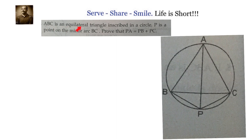ABC is an equilateral triangle inscribed in a circle. P is a point on the minor arc BC. Prove that PA equals PB plus PC.